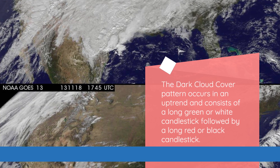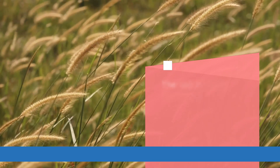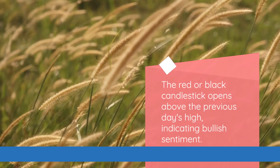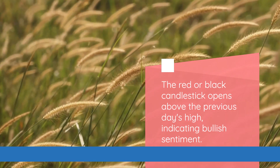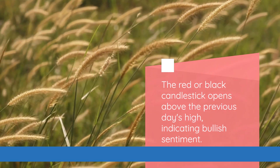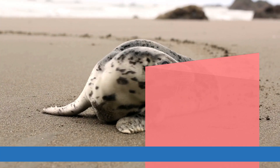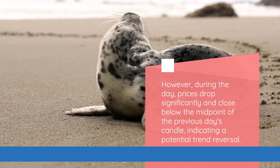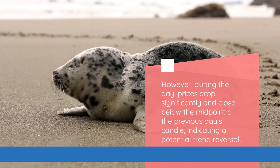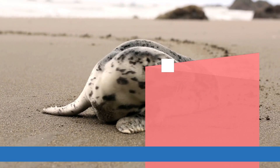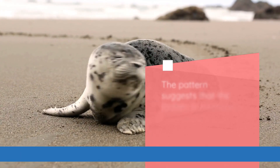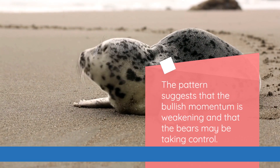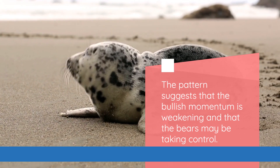The dark cloud cover pattern occurs in an uptrend and consists of a long green or white candlestick followed by a long red or black candlestick. The red or black candlestick opens above the previous day's high, indicating bullish sentiment. However, during the day, prices drop significantly and close below the midpoint of the previous day's candle, indicating a potential trend reversal. The pattern suggests that the bullish momentum is weakening and that the bears may be taking control.